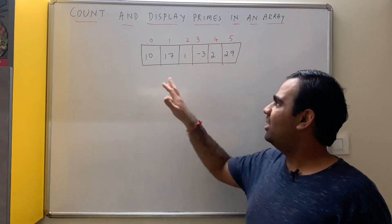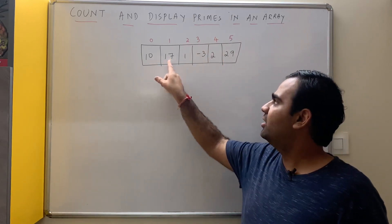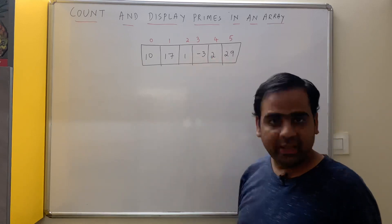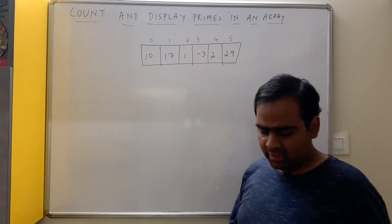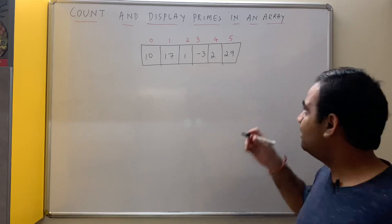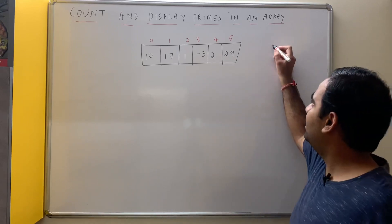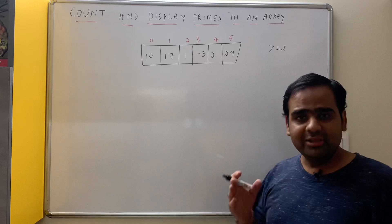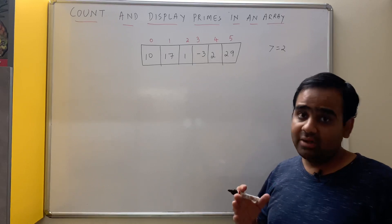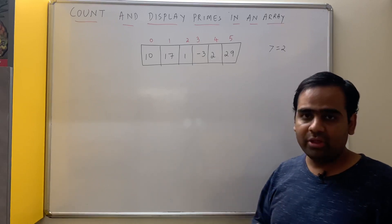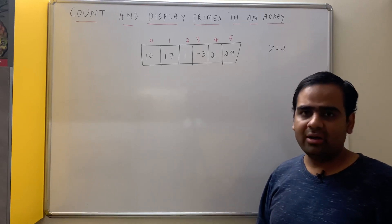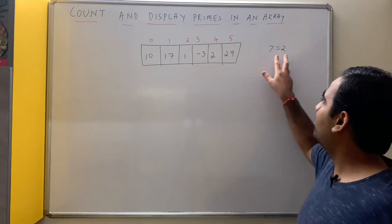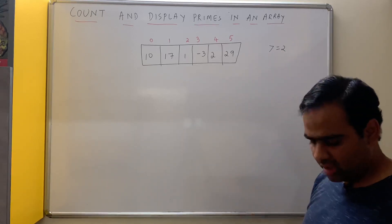For example, let this be the array: 10, 17, 1, minus 3, 2 and 29. Now what are prime numbers? The set of prime numbers is greater than or equal to 2. We know that 0 and 1 are neither primes nor composite, and negative numbers are not prime numbers. Prime numbers are positive numbers which are greater than or equal to 2.